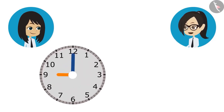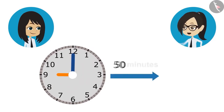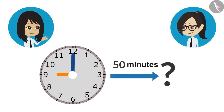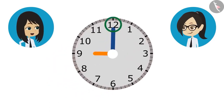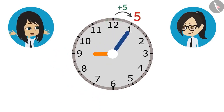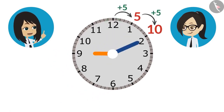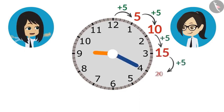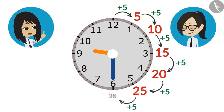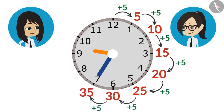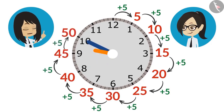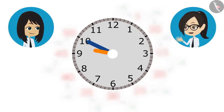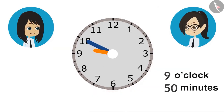Look here, I have drawn the start time of the class in this clock and we have to find out what will be the time after 50 minutes. We will look at the minute hand — right now it is at 12. When we bring it to 1 it will be 5 minutes, to 2 it will be 10 minutes, 15 at 3, 20 at 4, 25 at 5, 30 at 6, 35 at 7, 40 at 8, 45 at 9, and it will be 50 minutes at 10. This means our class will end at 50 minutes past 9 o'clock.